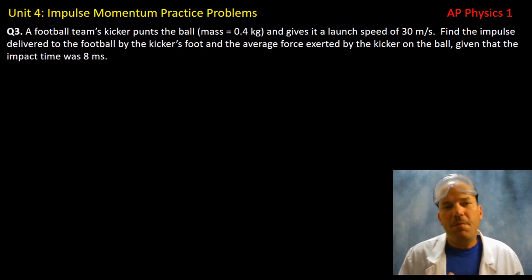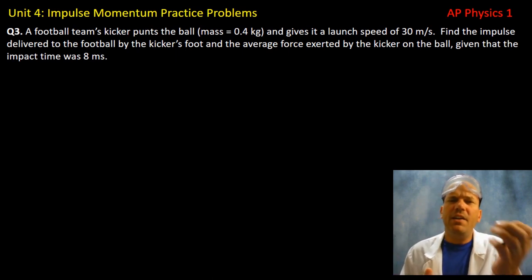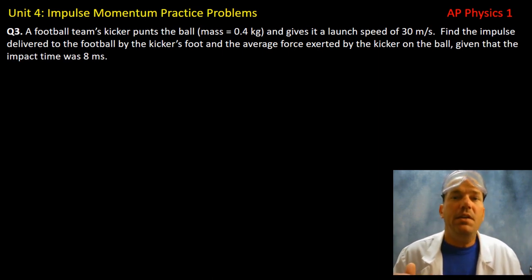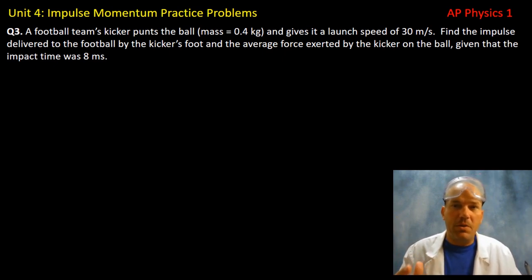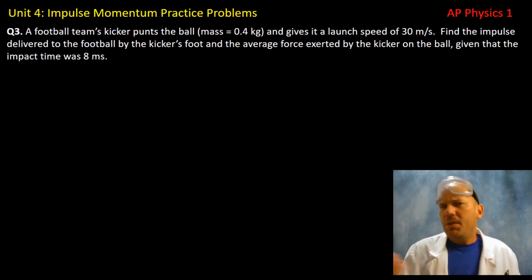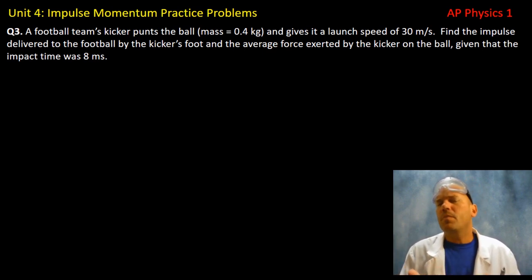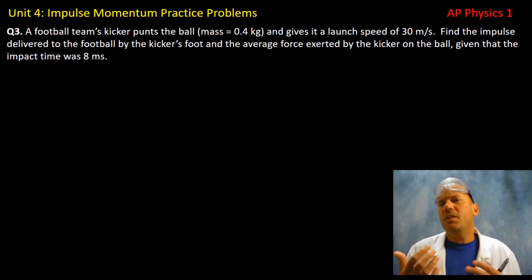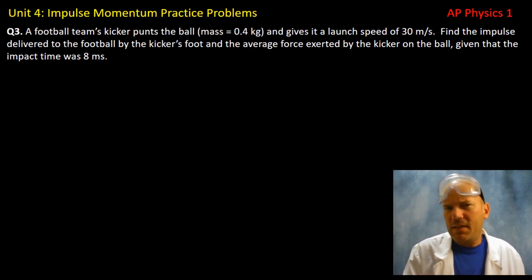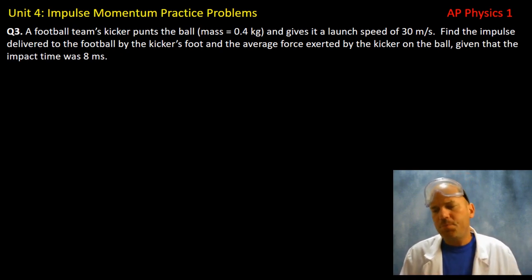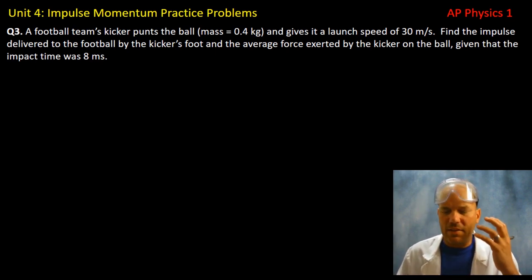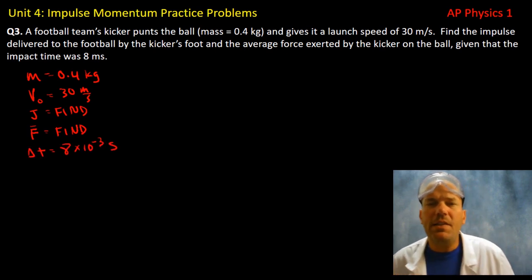Question three: a football team's kicker punts the ball. You're given mass and launch speed. You might go into UAM and kinematics mode, but we're asked to find the impulse delivered to the football by the kicker's foot and the average force given an impact time of 8 milliseconds. Because there was a collision — the foot and the football collided — we can use the impulse-momentum theorem.